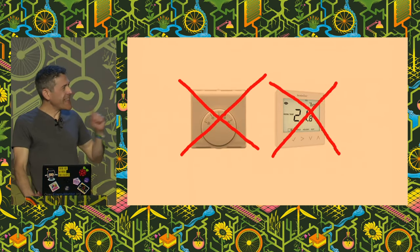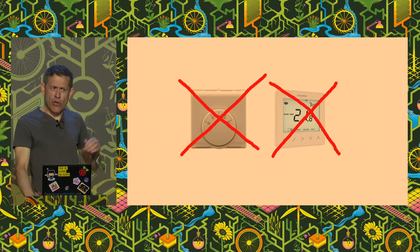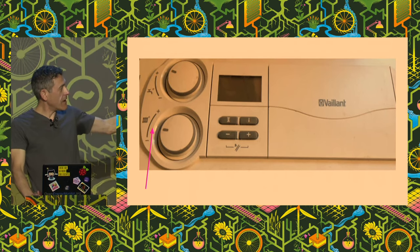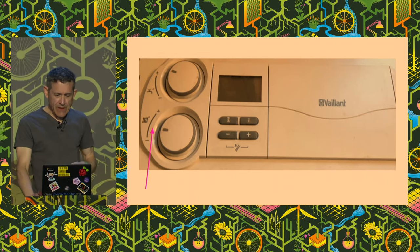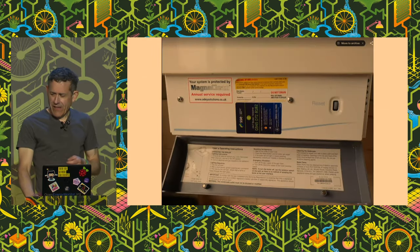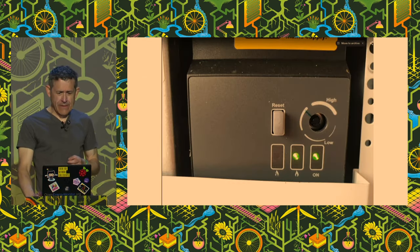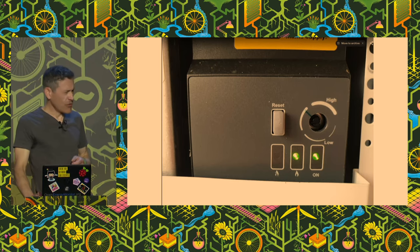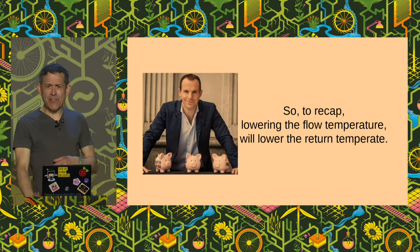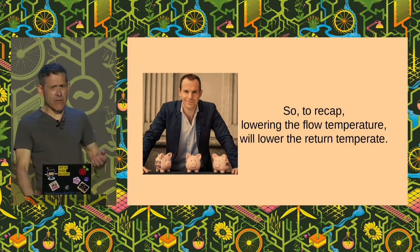The flow temperature control isn't the kind of room thermostats you see on the wall — those just say how hot you want the room. What you need is controls which are actually on the boiler itself, like this one here with the pink arrow. If you're lucky. If you're unlucky like me, you'll need a set of screwdrivers and some spanners and start dismantling your boiler until you find the flow control. To recap: lowering the flow temperature lowers the return temperature, leads to more condensation, which preheats the water, which means you use less gas, which saves you money and also the environment.